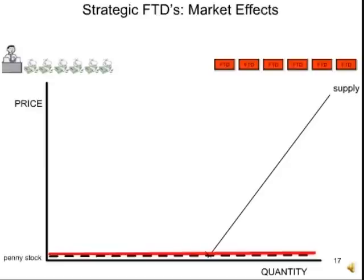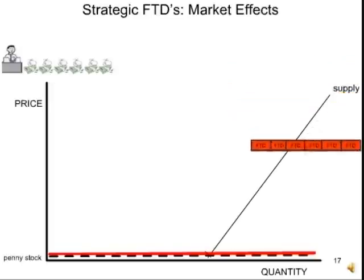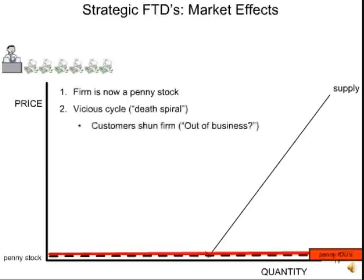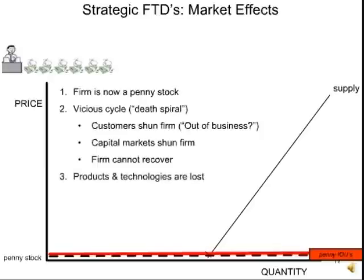The FTDs started off life as stock IOUs — sincere stock IOUs — but IOUs are just the same. Now that it's a penny stock, these FTDs become penny IOUs. Penny stock, penny IOUs. The fellow at the right has the money; the firm's a penny stock. A vicious cycle ensues where the company collapses. Other businesses stay away from the firm — they say it's a penny stock, wonder if it's going to be around, and stop doing business. Capital markets shun the firm. If you're a penny stock, you can't go into the world and raise capital. So as it loses customers and can't access the market, it can't recover.